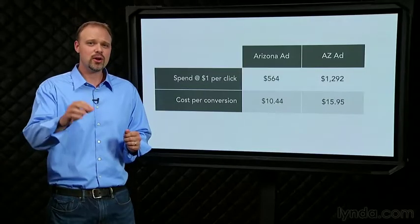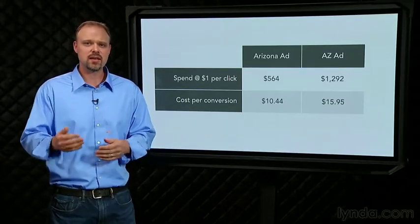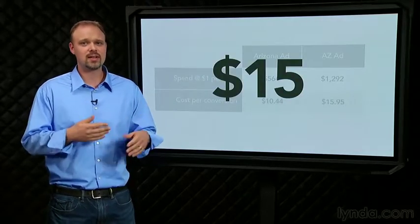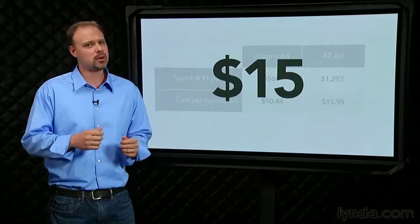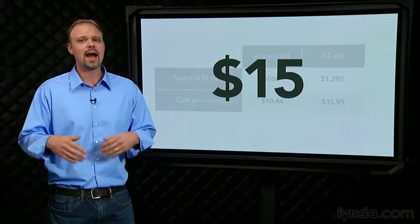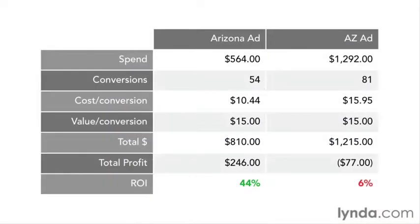Now here comes the part that makes it all clear. Let's say that each time someone submits a lead on this website, it's worth $15 to us in profit. Now I can calculate exactly how much each ad put in my pocket, and since I know how much I spent to get that conversion, I can also figure out my profit and my ROI. Two tiny little changes ended up being the difference between making money and losing money on this campaign. And if something that seemingly trivial can have such an impact, just imagine what your split test might show.